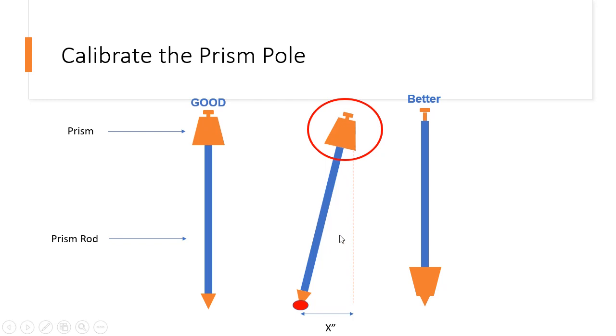But the idea behind this is that if you are using a prism pole to make measurements, especially control point measurements, this prism rod needs to be level. It needs to be level.